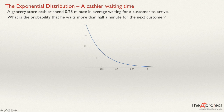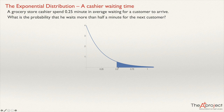So, the distribution has this shape. The question is: what is the probability that he waits more than half a minute? We need to find the area beyond 0.5 minutes. To answer this, it's useful to know the function of the exponential distribution. The probability density function is given by a formula.